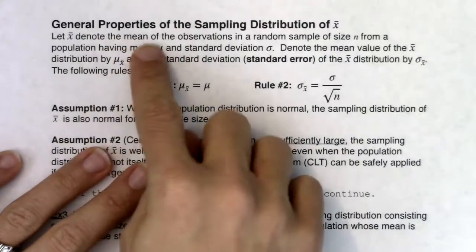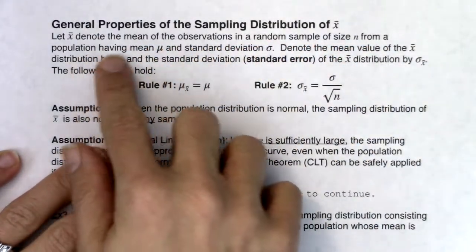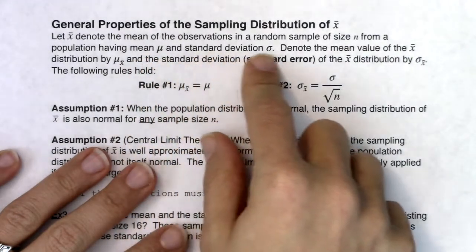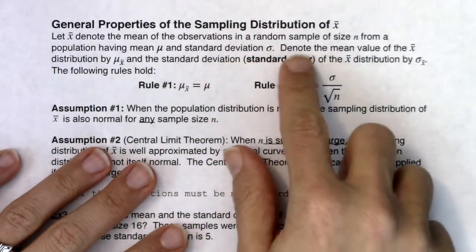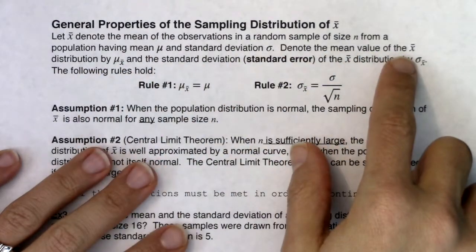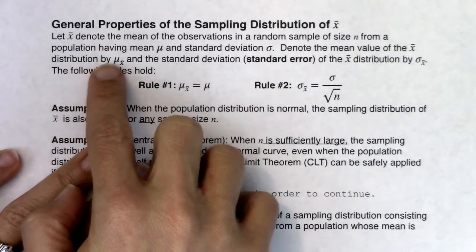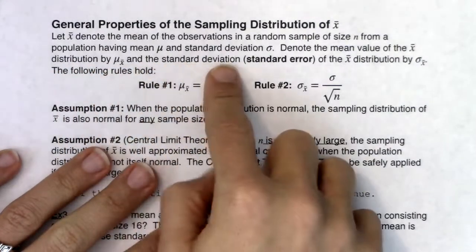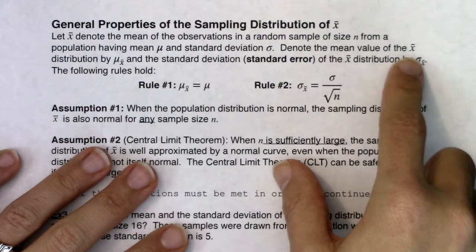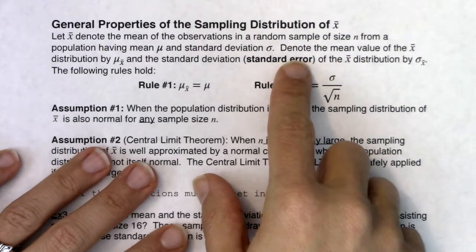Let X-bar denote the mean of the observations in a random sample of size n from a population having mean mu and standard deviation sigma. Denote the mean value of the X-bar distribution — the sampling distribution — by mu sub X-bar, and the standard deviation of the X-bar distribution by sigma sub X-bar. Sometimes you'll hear me refer to this as the standard error. The following rules hold.